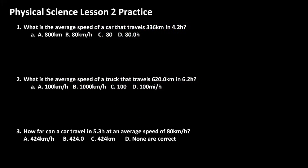Now we're going to spend some time going over the problems on this practice worksheet. The first problem says, what is the average speed of a car that travels 336 kilometers in 4.2 hours? In this case, we're looking for average speed. We are given a distance — not a displacement, but a distance — and we also have a time. So we're going to use the equation: average speed equals distance divided by time.